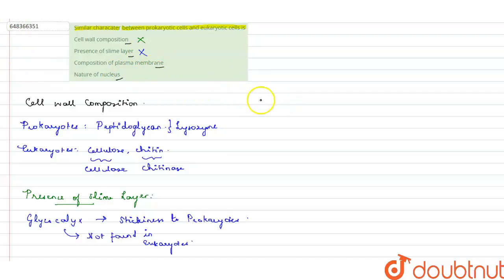The third option is composition of plasma membrane. Both eukaryotes and prokaryotes possess a plasma membrane, but you're asking about composition. If you see prokaryotic plasma membrane and eukaryotic plasma membrane, that's the difference.